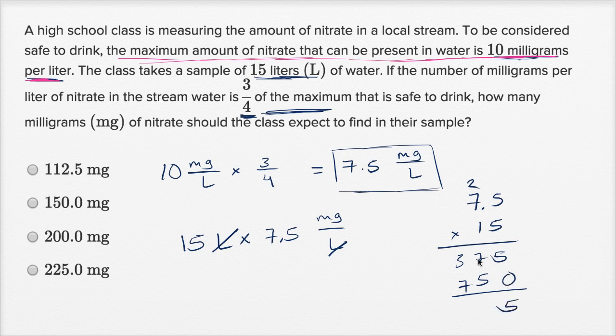So let's see, 5 plus 0 is 5, 7 plus 5 is 12, and then 4 plus 7 is 11. And you have one digit behind the decimal point. So they would expect to find 112.5 milligrams. And there we go.